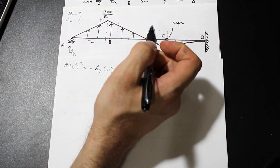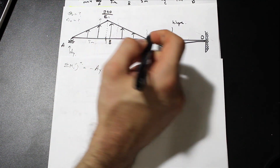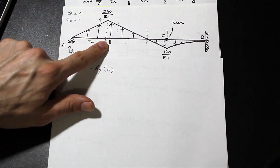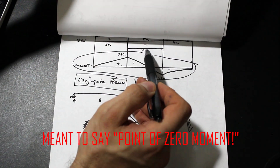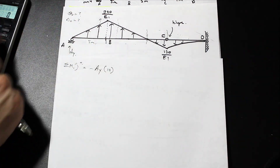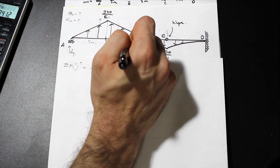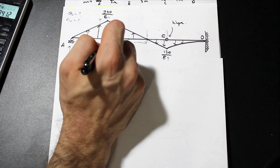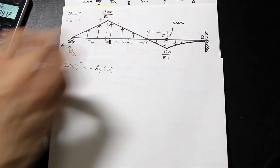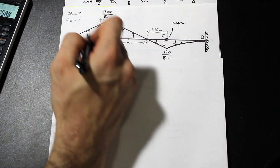Now let's look at the distances. The span from A to B is 5 meters and B to C is 5 meters, but we also need the distance to the point of zero moment. Going back to the shear diagram, the shear is 102, and dividing 390 by 102 gives us 3.92 meters — that's the distance from B to the point of zero moment. The distance from C to that point is 5 minus 3.92, which is 1.18 meters.